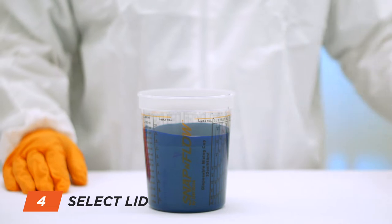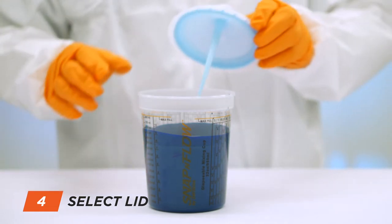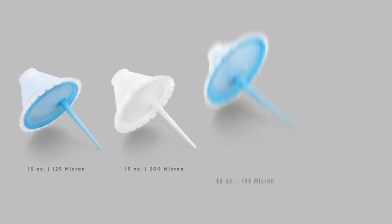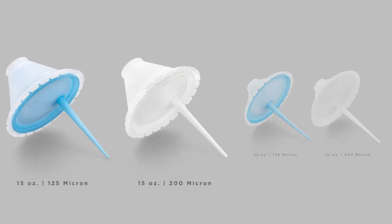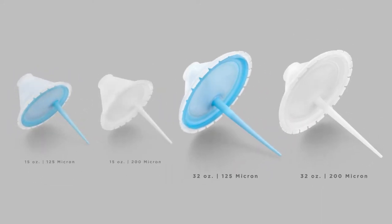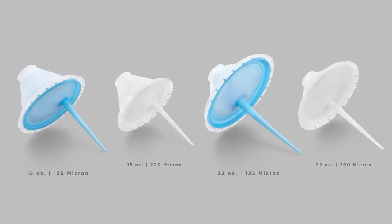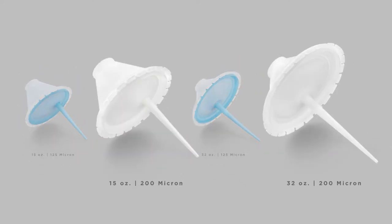Get the desired Snap and Flow disposable vented lid from the carton. These lids come in different sizes to match the cup capacity, 15 or 32 ounces. Each size is available with filter options of 125 or 200 microns.